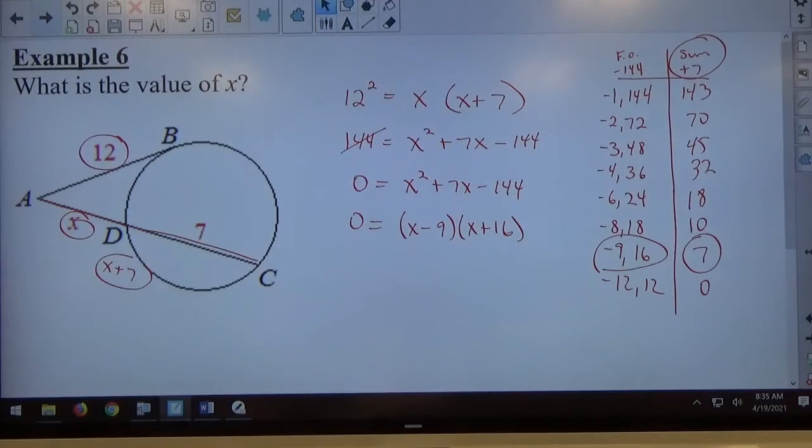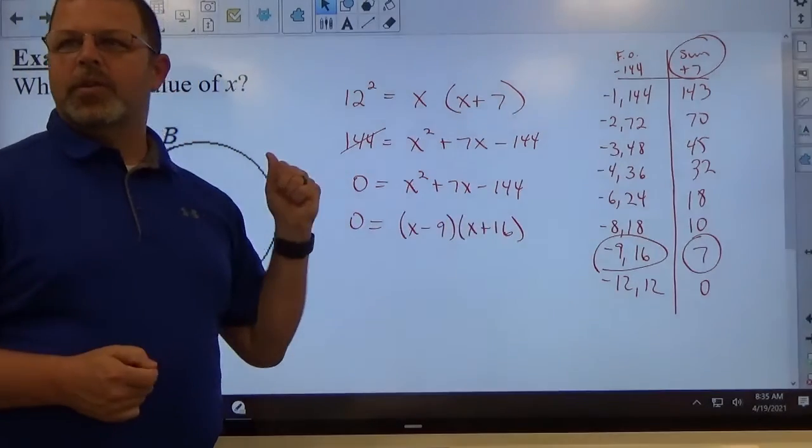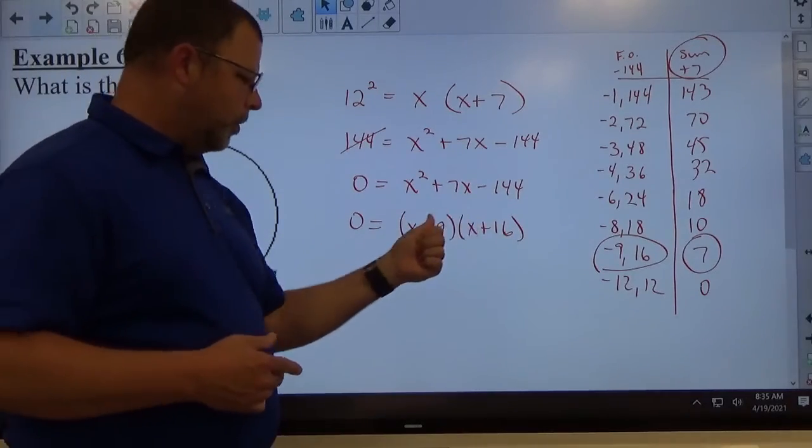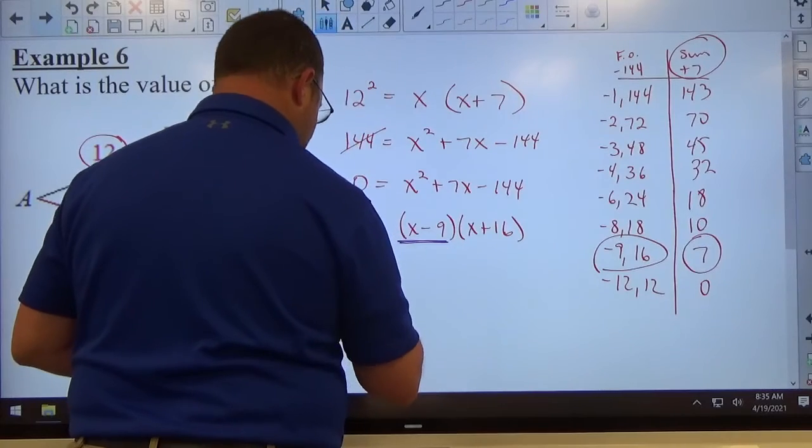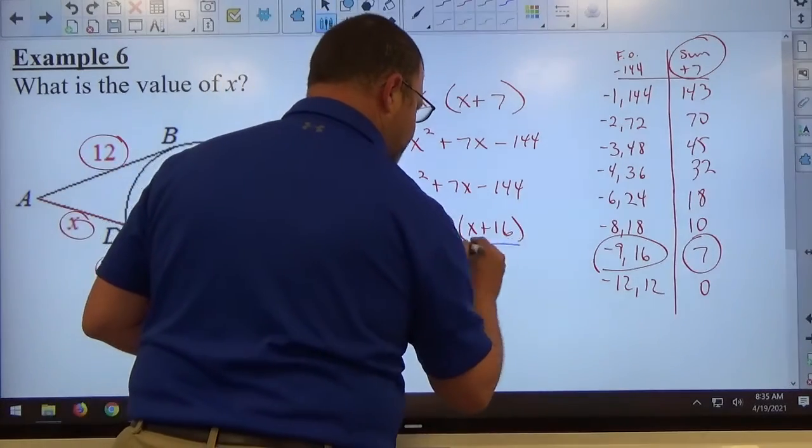So once you get factored form equal to 0, the reason we want factored form is we have a product. And the way 0 works in products is if you multiply by 0 you get 0, doesn't matter what that other number is. So we change to a product equal to 0 and we can separate it into either product factor 1 equals 0 or we could say factor 2 equals 0.